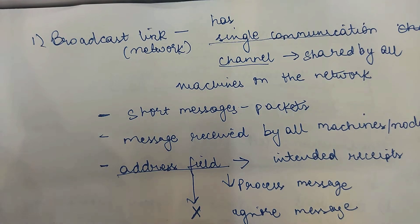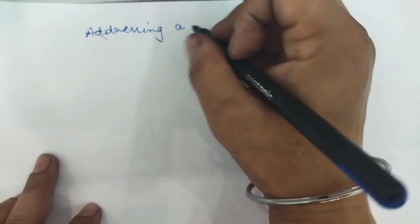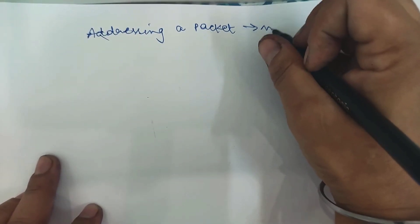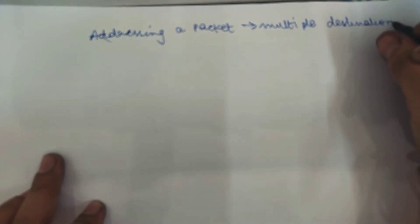It is also possible to send the same message to more than one destination. In broadcast networks, a message is typically sent to a single destination — the address of that particular machine is mentioned in the address field and only that machine processes it. But it is also possible to address a packet to multiple destinations in case of broadcast links or broadcast networks.